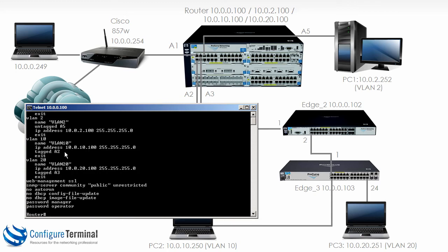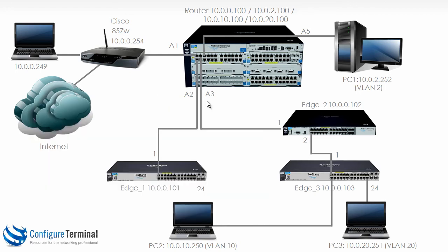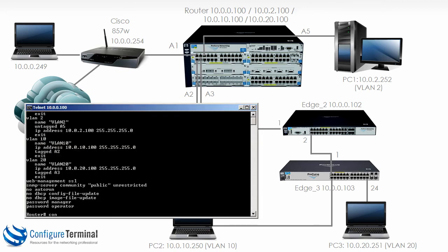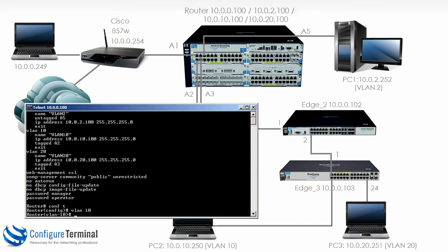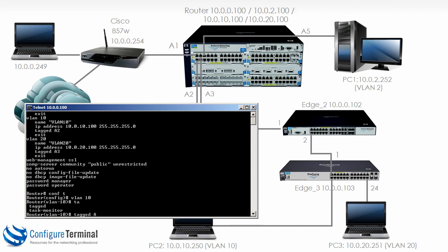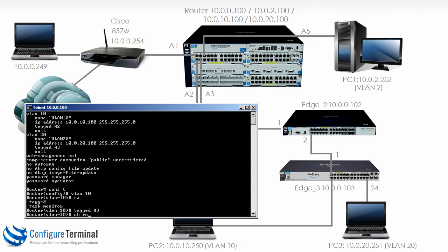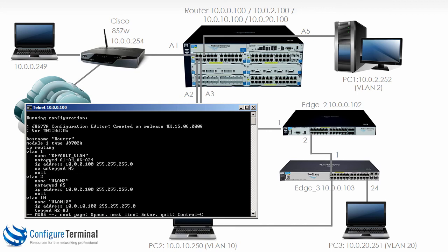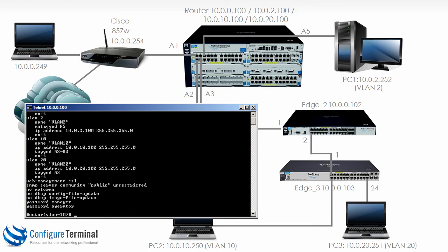VLAN 10 is tagged on port A2. We need to tag it on port A3 as well — the link between the 5406 router and Edge 2. So 'conf t', 'VLAN 10 tagged A3.' Show run now shows VLAN 10 is tagged on both port A2 and A3.